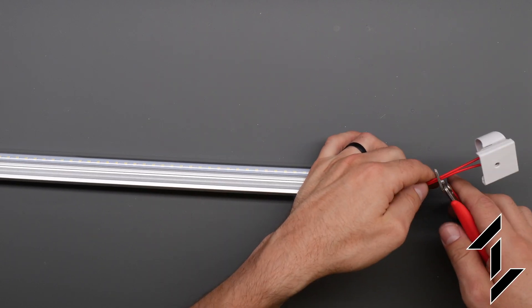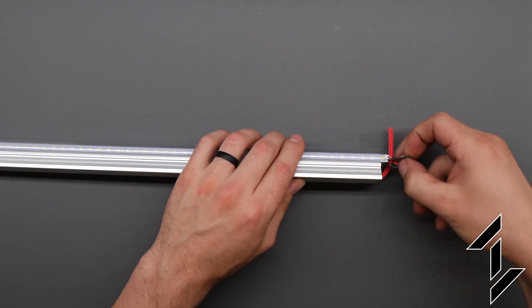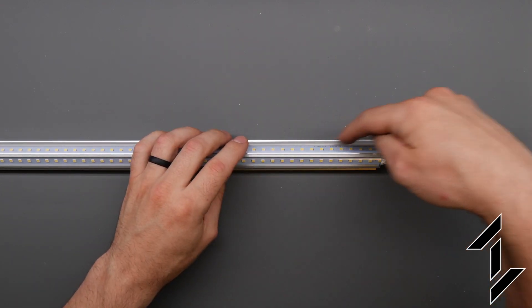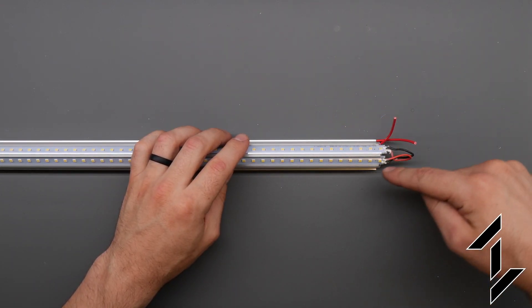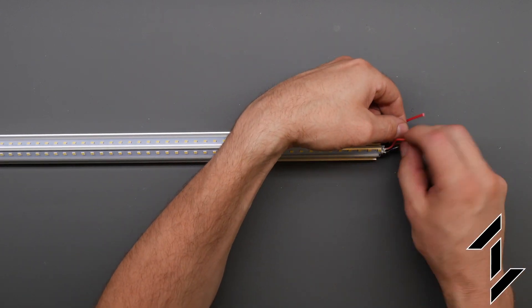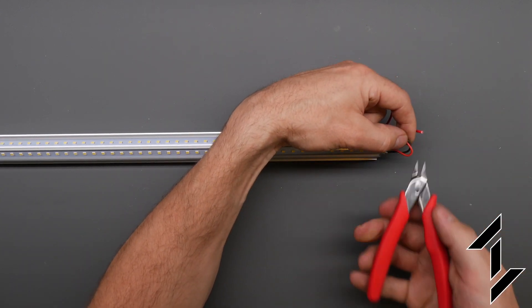We don't need this one so we'll clip it and then we can see power must come in one of these strips and then loop back around to the other strip. So in order to pull these out we'll have to clip these as well.